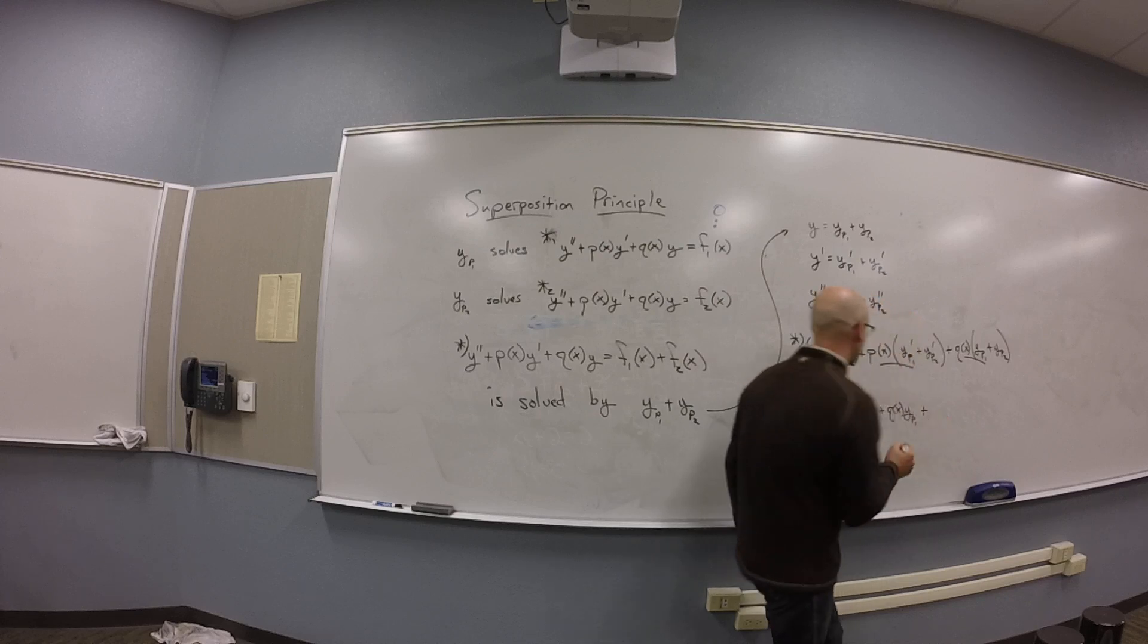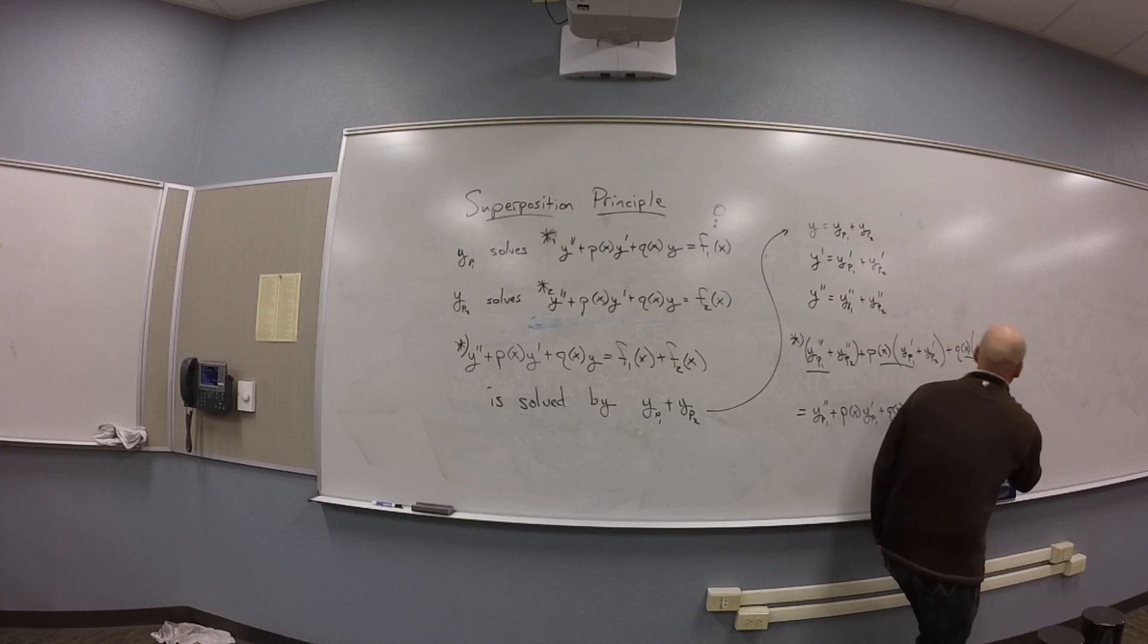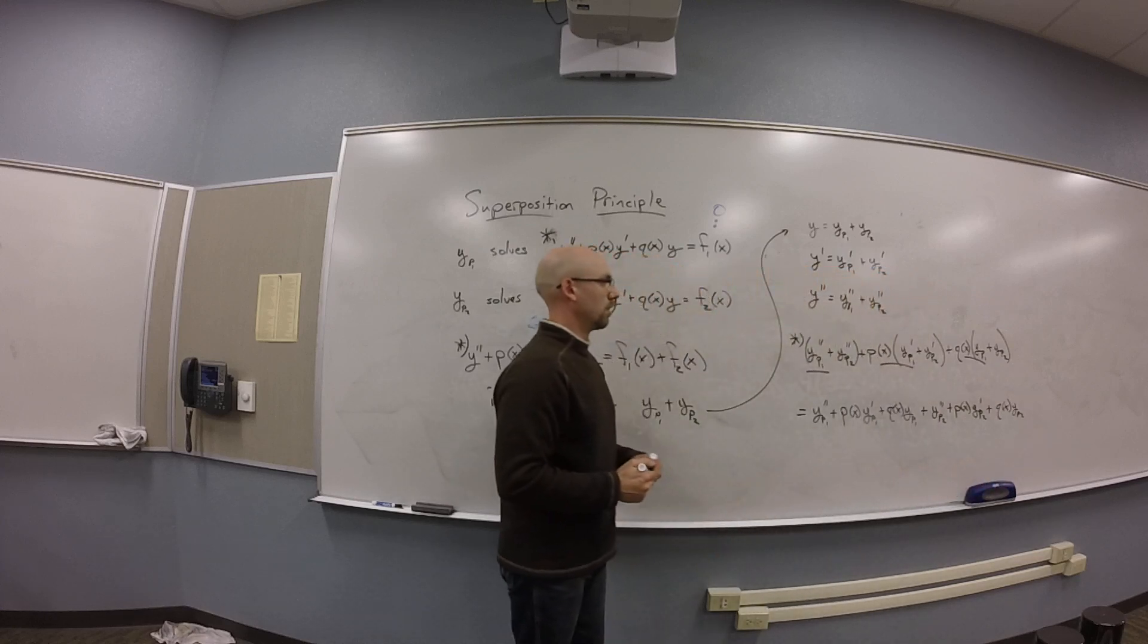And then I also have the un-underlined stuff, right? So I've got yp2 double prime plus p of x yp2 prime plus q of x yp2, right?